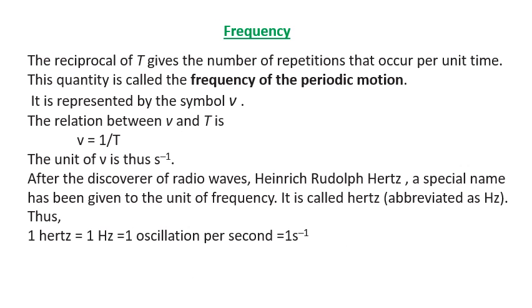The reciprocal of time gives the number of repetitions that occur per unit time. This quantity is called frequency of periodic motion. It is denoted by the symbol nu, and mathematically nu is 1 by T. Its SI unit will be per second.